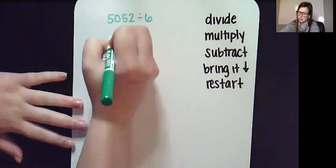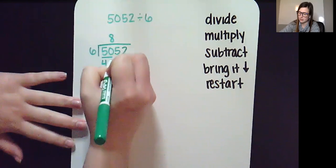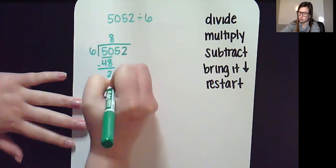If I have 50, I can make 8 groups of 6. That would be 48. And when I subtract, I'm left with 2.